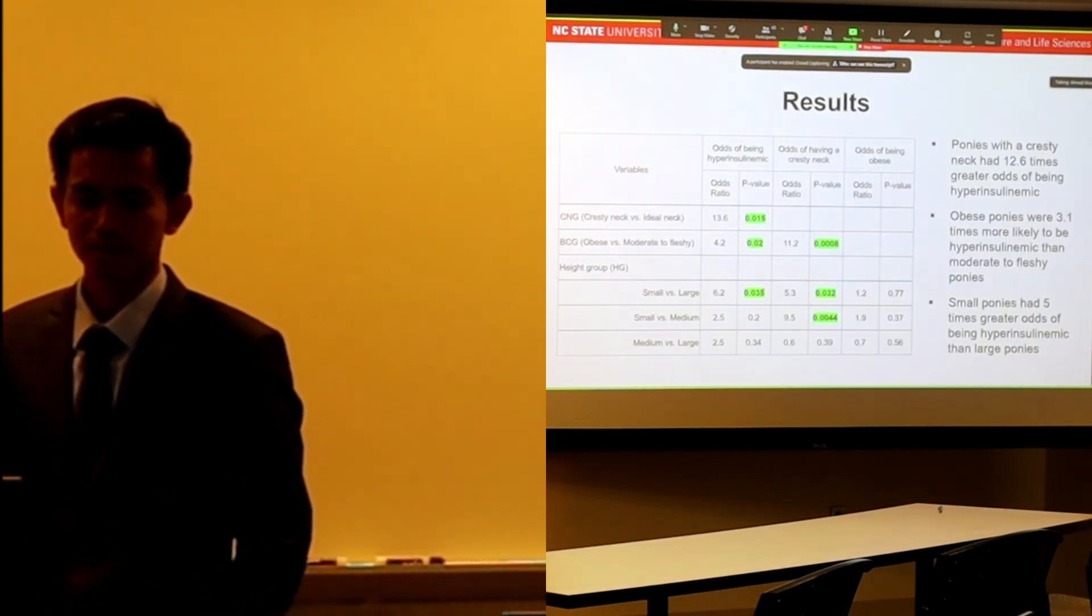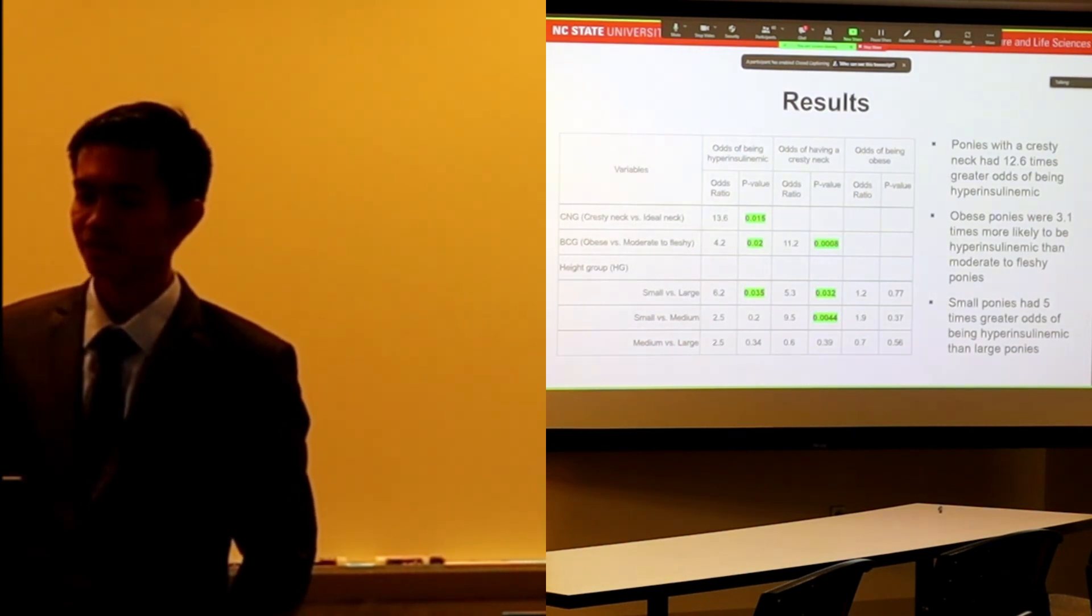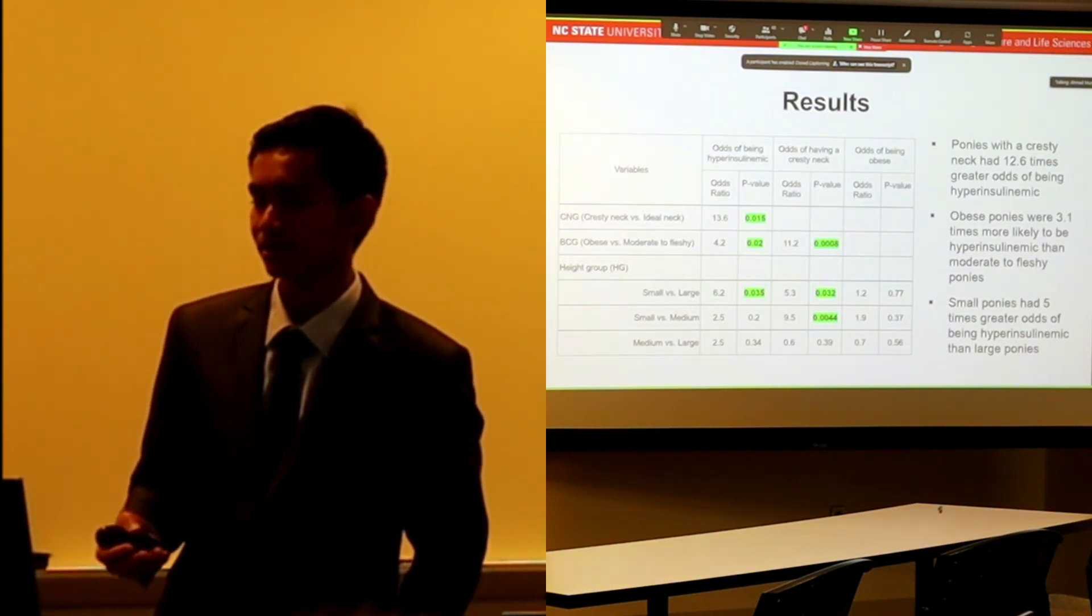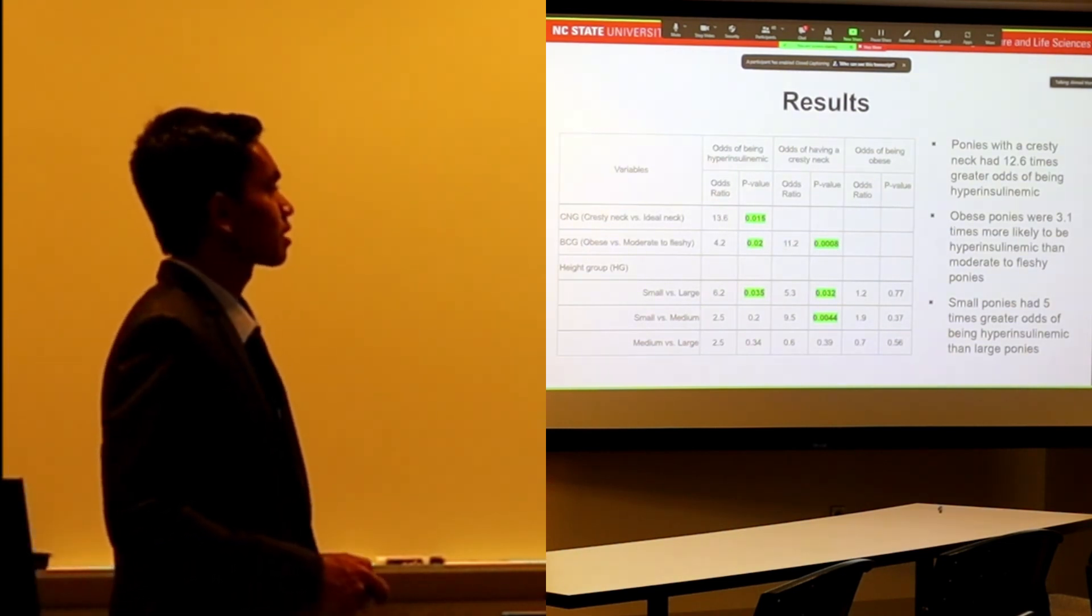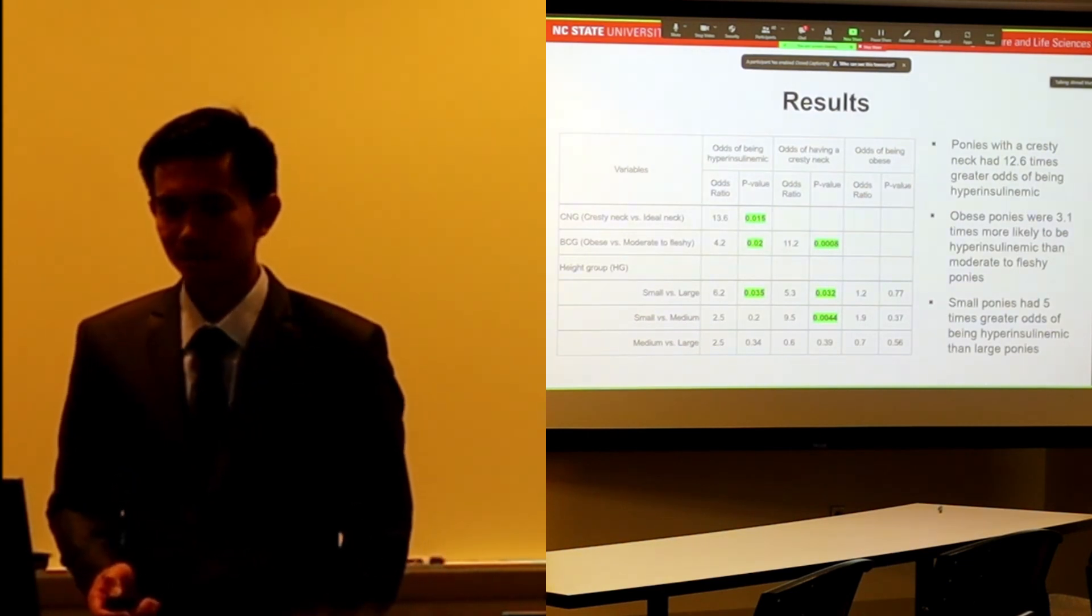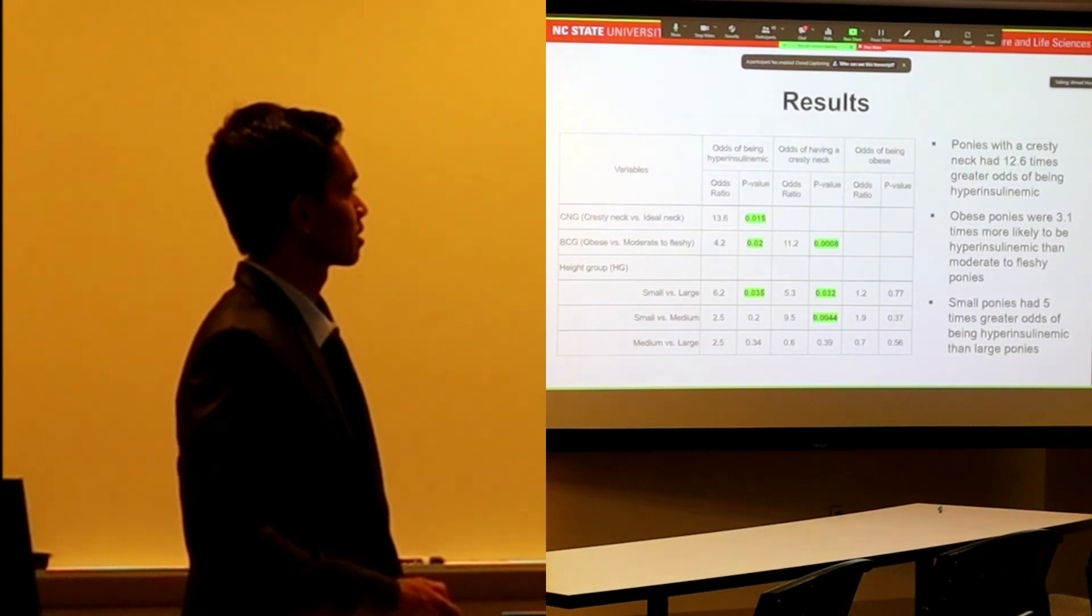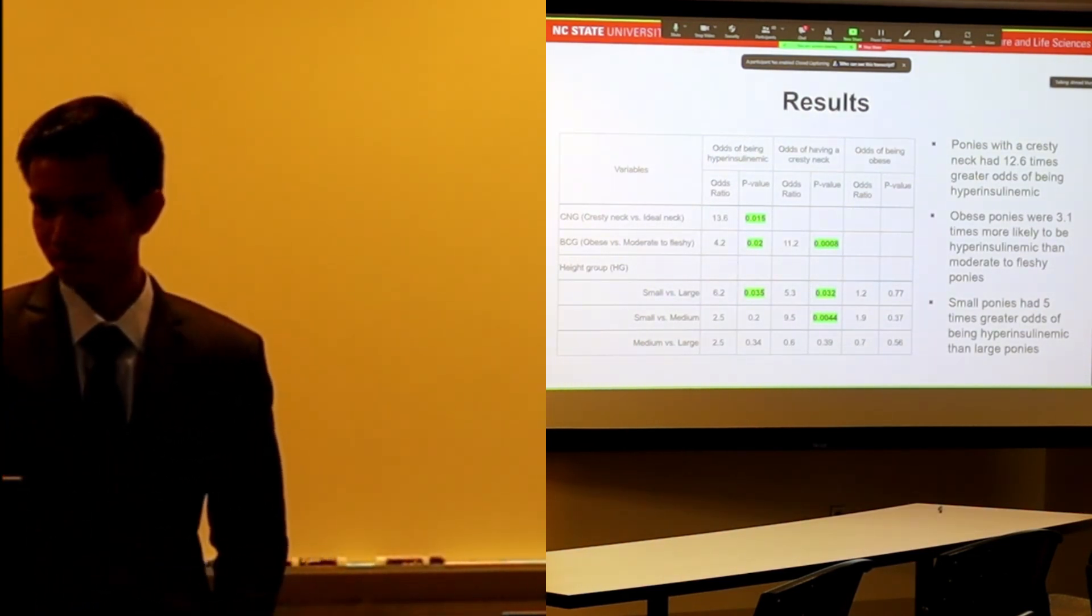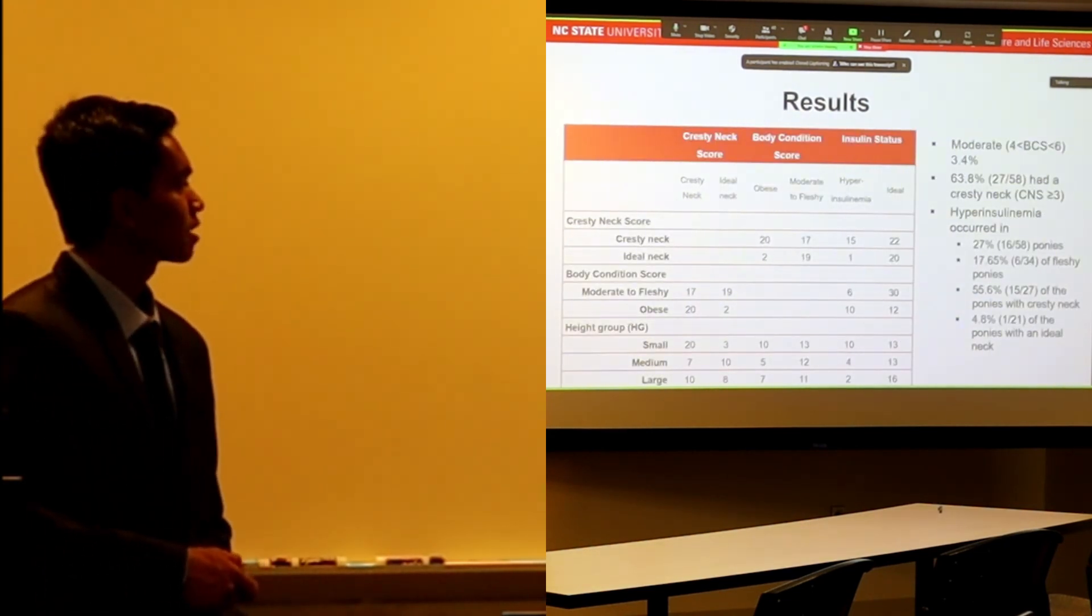Meanwhile, ponies with obese body condition had 3.1 greater odds of being hyperinsulinemic than moderate to fleshy ponies. Surprisingly, small ponies had around 5 times greater odds of being hyperinsulinemic than large ponies. But we can appreciate this because there were plenty of small ponies in the previous slide.